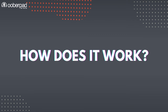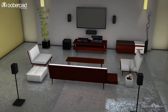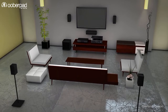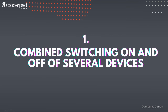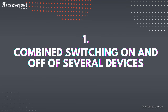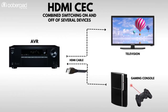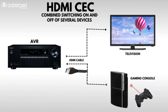So how does it work and what can it be used for? If both the TV and the devices connected to it support HDMI CEC, the following options become available. First, combine switching on and off of several devices. For example, the user turns on or off the game console or TV box, then subsequently these devices turn on or off the TV and vice versa.